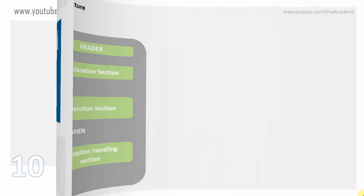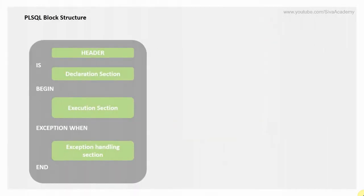Before we start understanding this concept, let us first understand a few basic things about the PL/SQL block structure, so that our understanding of this concept will be much easier. Here is a simple PL/SQL block structure — this is the structure we'll be using whenever we create a procedure, function, or trigger. The block should have a header, followed by the declaration section, which will start typically with either the IS or AS keyword.